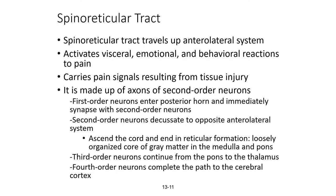The spinal reticular tract also travels up the anterolateral system. It activates visceral, emotional, and behavioral reactions to pain and carries pain signals resulting from tissue injury. First order neurons enter the posterior horn and synapse with second order neurons, which decussate to the opposite anterolateral system, ascend the cord, and end in the reticular formation — a loosely organized web of gray matter throughout the medulla and pons. Third order neurons continue from the pons to the thalamus, and then fourth order neurons complete the path to the cerebral cortex.